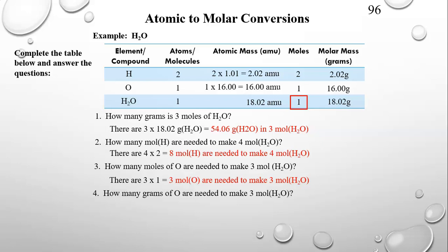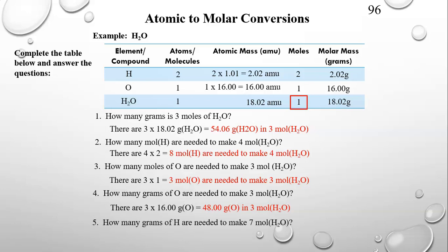Question four: How many grams of oxygen are needed to make three moles of H2O? One mole of H2O requires 16 grams of oxygen, so three moles requires three times 16 equals 48 grams of oxygen. Question five: How many grams of hydrogen are needed to make seven moles of H2O? For one mole of H2O you need 2.02 grams of hydrogen, so seven times 2.02 equals 14.14 grams of hydrogen needed to make seven moles of H2O.